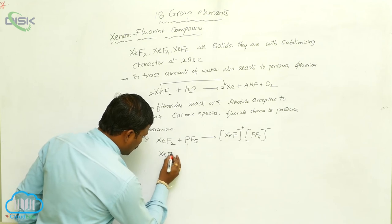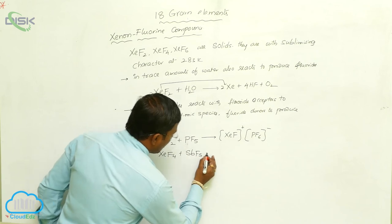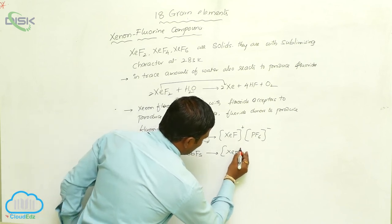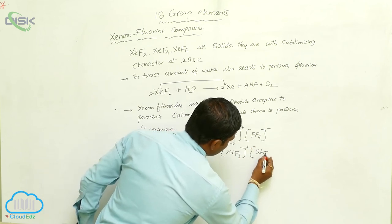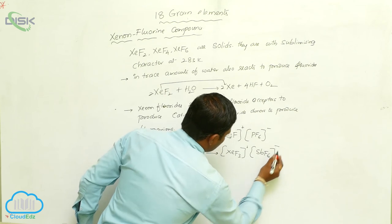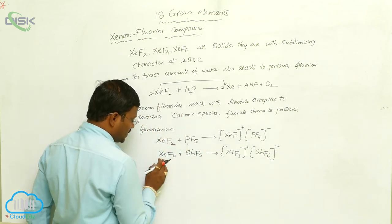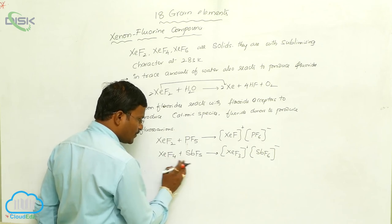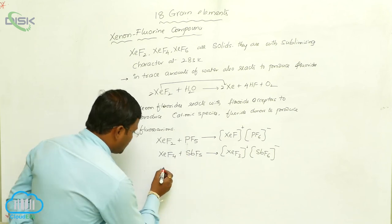xenon tetrafluoride by reacting with antimony pentafluoride also exhibits the same: XeF3+ and SbF6-. So anionic fluoride species are expected when the reaction takes place between xenon tetrafluoride with fluoride acceptors like antimony pentafluoride.